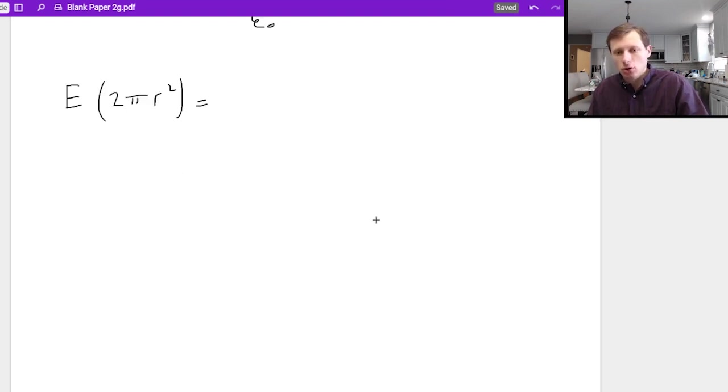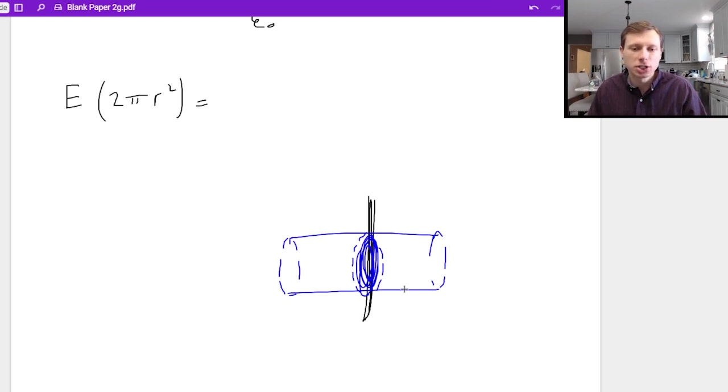And then that will be equal to the charge enclosed. Now let me just draw my shape one more time. Again this is the side view. If I have my cylinder here then the charge enclosed is going to be the charge right inside the middle region here which again is a circle pi r squared. And the way I'm actually going to find my charge is by writing the equation for surface charge density. Sigma equals charge over area.